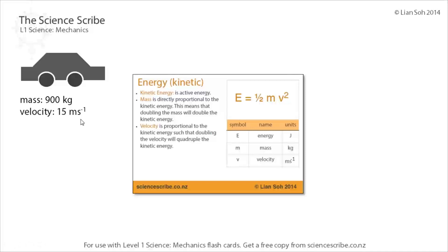I simply use E equals half mv squared. My mass is 900 kilograms and my velocity is 15 meters per second. Convince yourself that you can put these numbers into the calculator and wind up with...